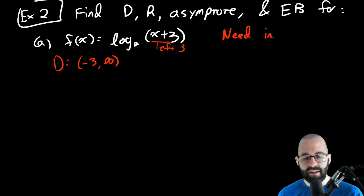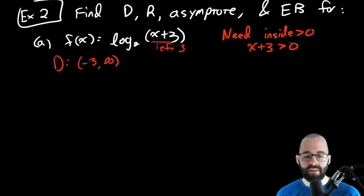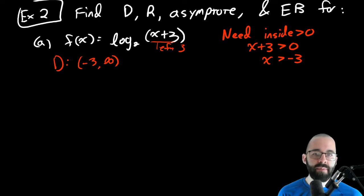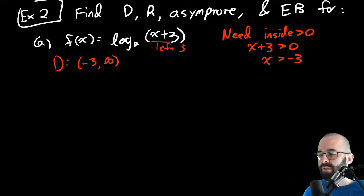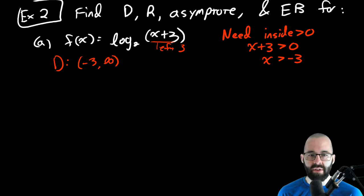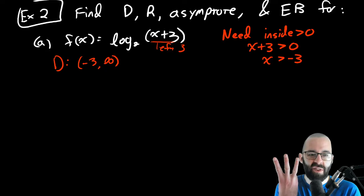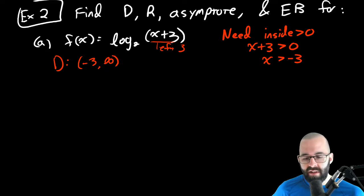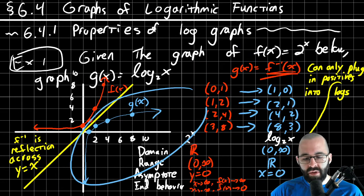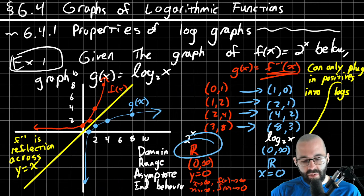Alternatively, we need the inside to be positive: x + 3 > 0, so x > −3. This connects to domain rules from the course — fractions can't divide by zero, radicals need the inside ≥ 0, and logarithms need the inside strictly greater than zero. The range of any logarithm is all real numbers — no matter what transformation you apply to the graph, the range is always all real numbers.